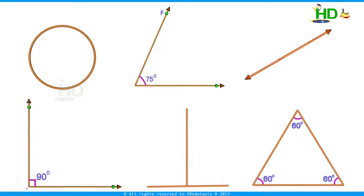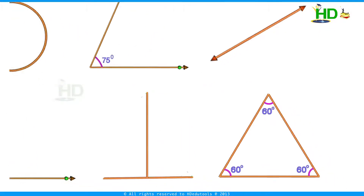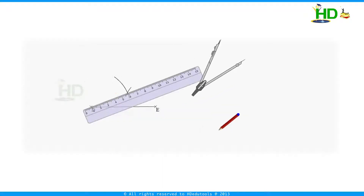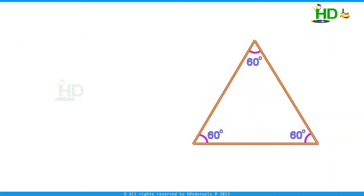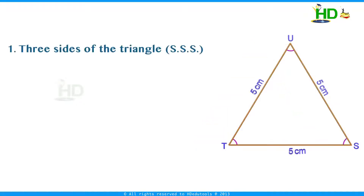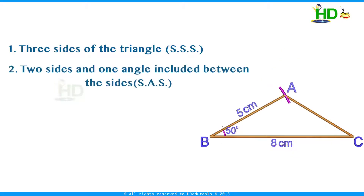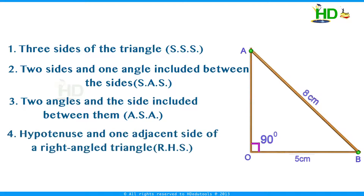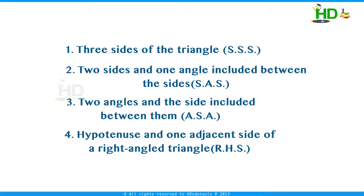In previous classes we learned different geometrical shapes. A triangle is a closed shape with three sides and three angles. In this topic we are going to learn how to construct triangles. You do not need all six elements to construct a triangle. A triangle can be drawn if we know: three sides, two sides and the included angle, two angles and the side between them, or the hypotenuse and one side of a right angle triangle.